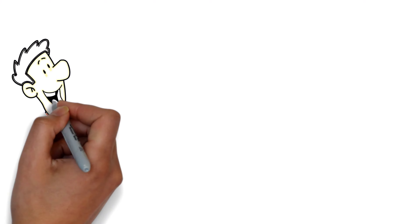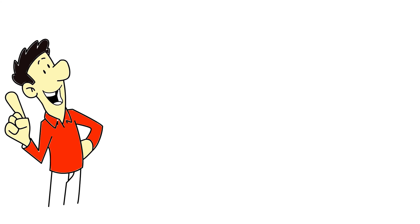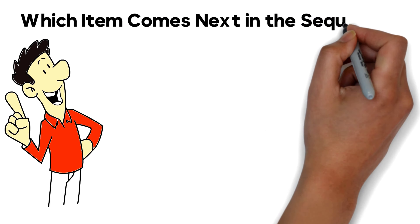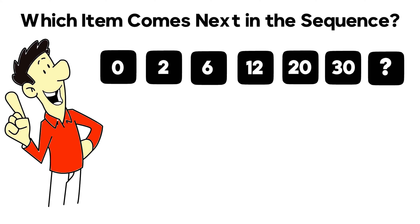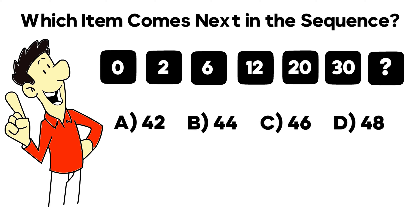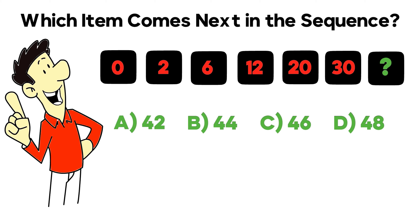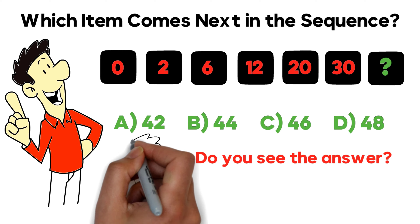Very frequently on the test, you might be asked to detect the pattern for a number sequence. The question asks which item comes next in the sequence: 0, 2, 6, 12, 20, 30. The next item is missing. You need to select from choices A — 42, B — 44, C — 46, and D — 48.